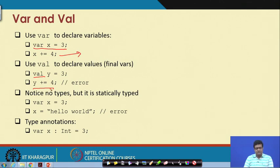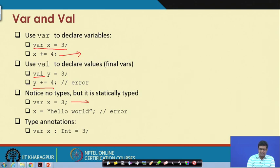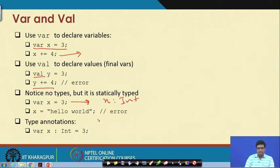There are certain variables which are immutable. Note that we have not specified any type — the type will be inferred. For example, the type of x will be taken as Int because you initialized it with 3, so if you later try to assign x = "hello world" it will give an error. Of course, you can also explicitly mention the type.